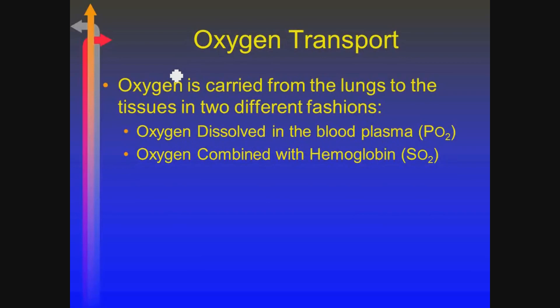Oxygen is carried in two different fashions from the lungs to the tissues: that which is dissolved in plasma, which we've already talked about — the PO2, the partial pressure, the oxygen tension — and that which is attached to hemoglobin, which we're going to call the saturation, denoted by the letter S.